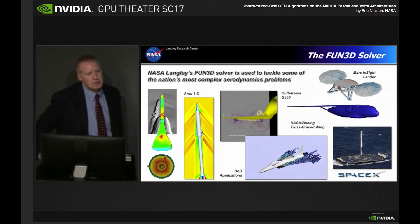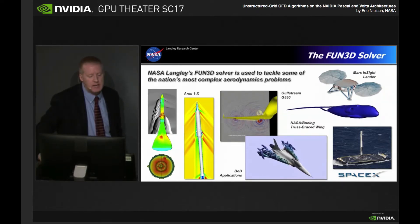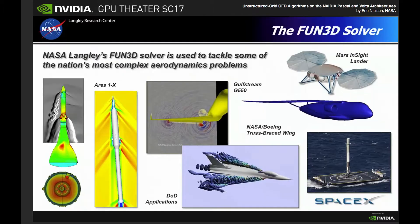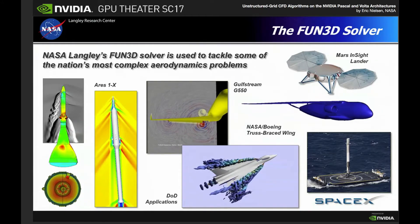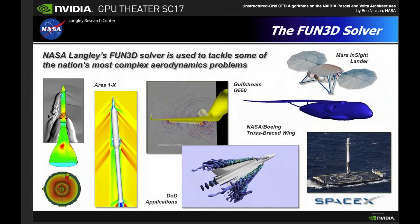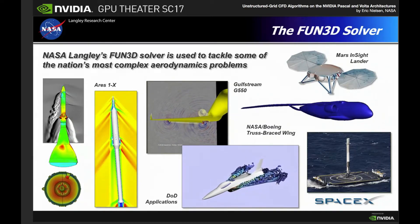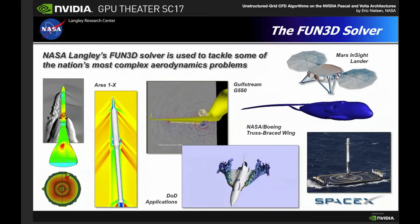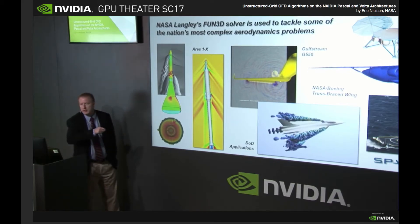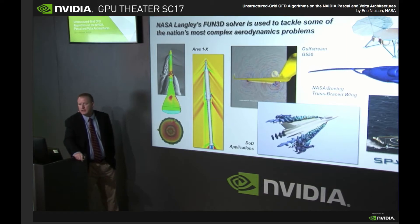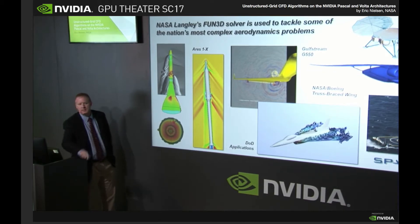The solver that we're dealing with is known as Fun3D. It's an unstructured grid solver, and it's very widely used across NASA as well as outside NASA for any number of different projects. Certainly for things like space launch — for example, this picture here on the far left is what's known as our launch abort system. One thing we learned during the shuttle program is we need to keep that crew on top of the stack, so in the event of an emergency during ascent, we can fire these motors and carry the crew off to safety. This is a very expensive simulation — one of these simulations takes about 30 million CPU hours to get an answer.